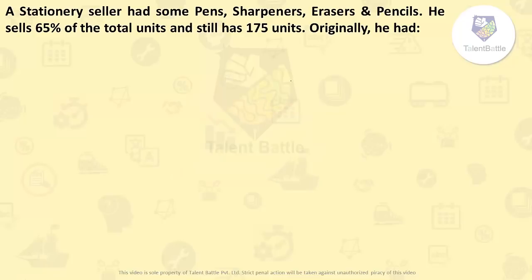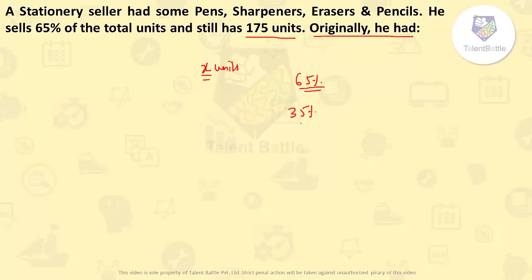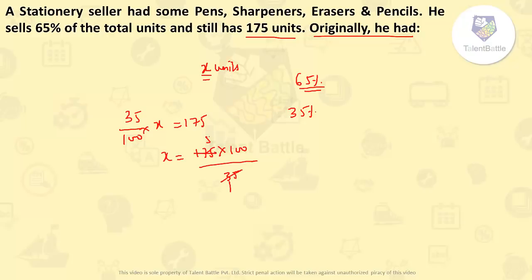Check this question. A stationary seller had some pens, sharpeners, erasers and pencils. He sells 65% of the total units and still has 175 units. We need to calculate how many units he originally had. Let us consider originally he had X units. So if he sells 65% of total units, he still has 35% of total units. So 35% of total units will be equal to 175. So X will be equal to 175 into 100 divided by 35, which gives 500. So the total number of units he originally had was 500 units.